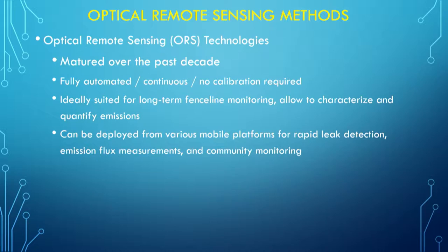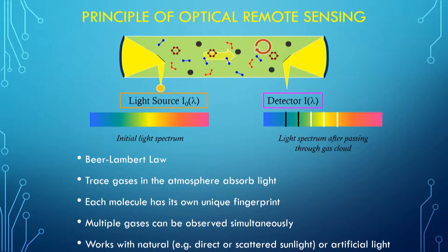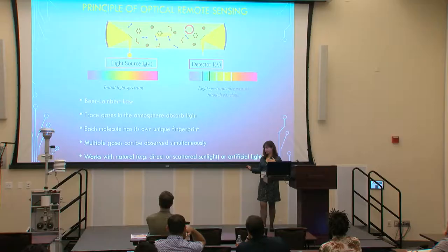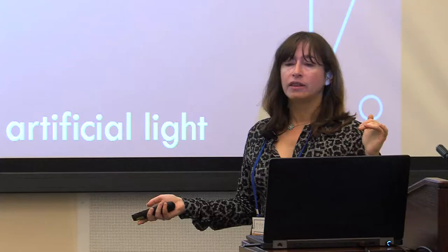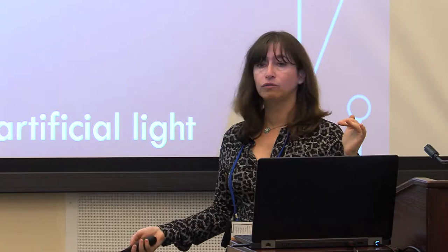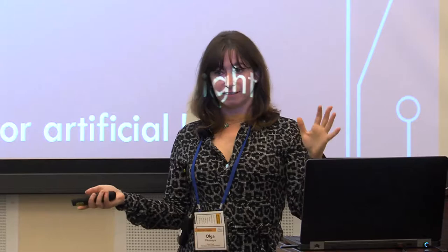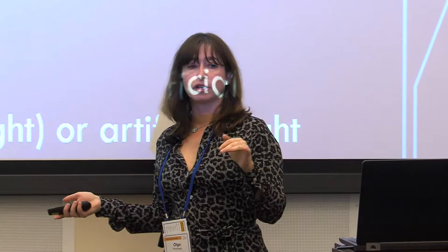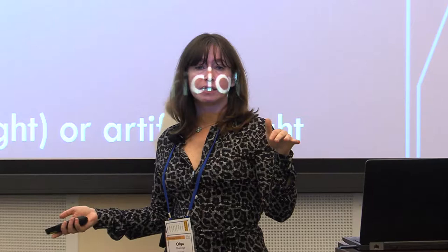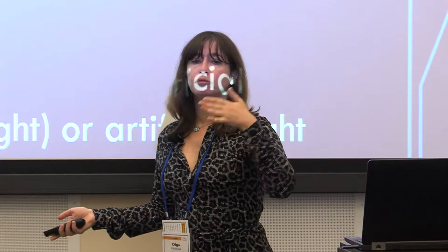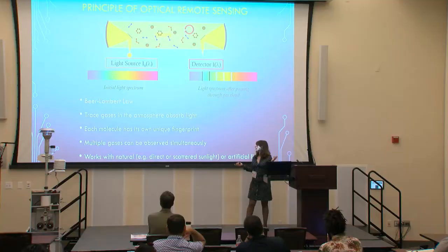It can also be deployed on a mobile platform. There are a multitude of optical remote sensing methods, but they all stem from the same principle — essentially the Beer-Lambert law, which says that light going through a medium is attenuated by the constituents in that medium, each in different wavelengths in a very unique way, so you can separate different pollutants simultaneously. Because each pollutant has a very unique fingerprint, you can conduct measurements very quickly for multiple pollutants. It works with direct sunlight, scattered sunlight, and artificial light, and depending on the molecules you want to measure, you select the optical remote sensing method and wavelength.